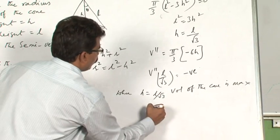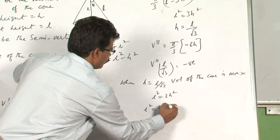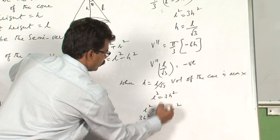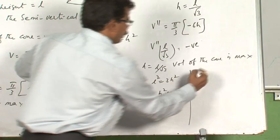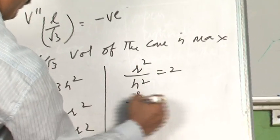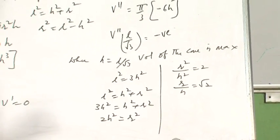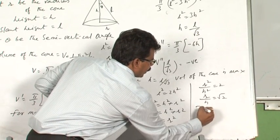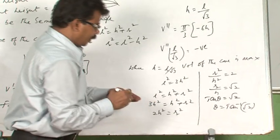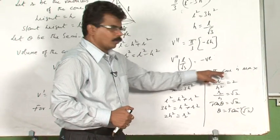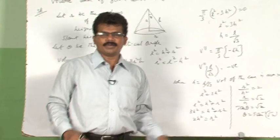When the volume is maximum, l² = 3h². Using l² = h² + r², we get 3h² = h² + r², so 2h² = r², giving r/h = √2. From the triangle, r/h = tan θ since θ is the semi-vertical angle. Therefore, tan θ = √2, which means θ = tan⁻¹(√2). The volume of the cone is maximum when the semi-vertical angle is tan⁻¹(√2).